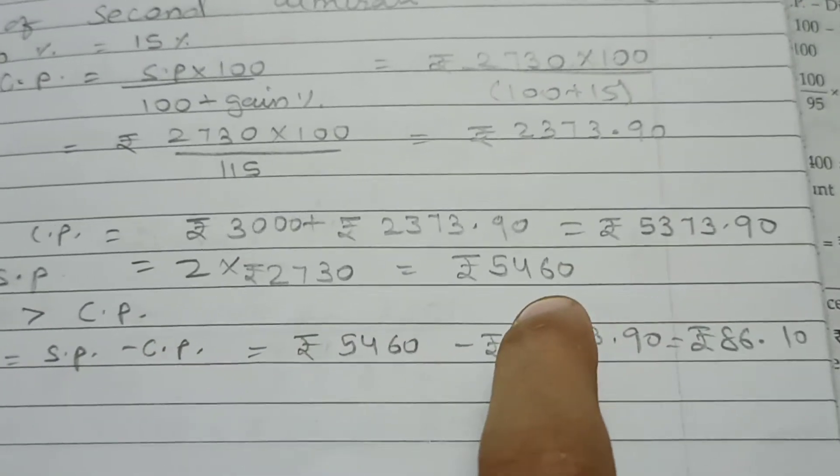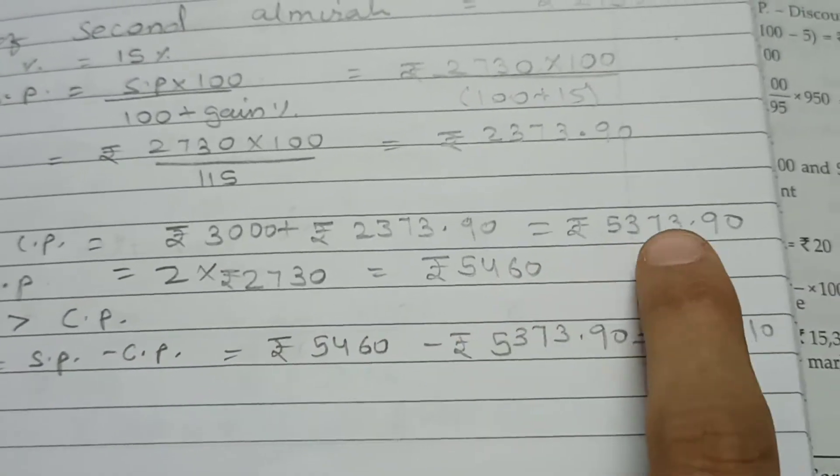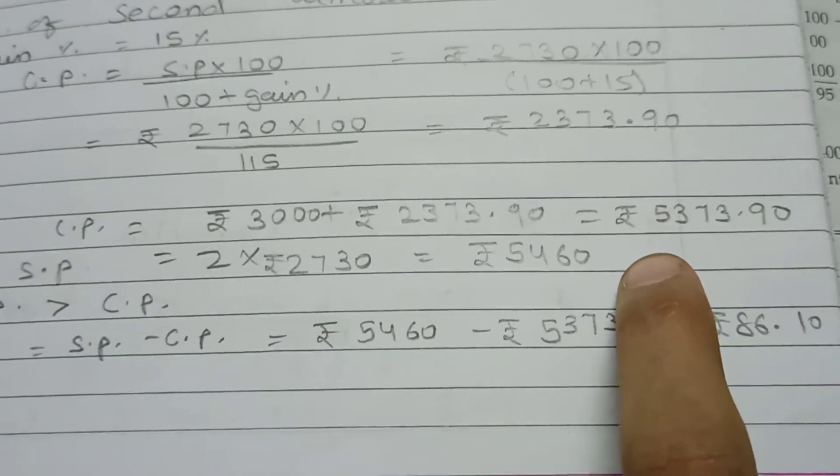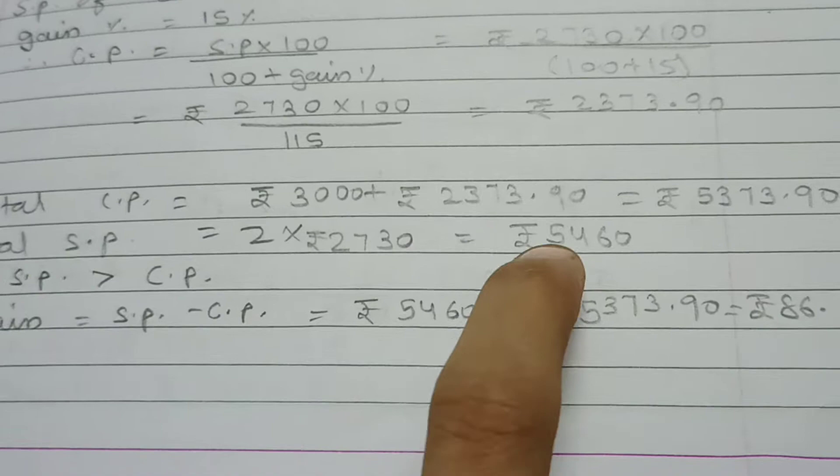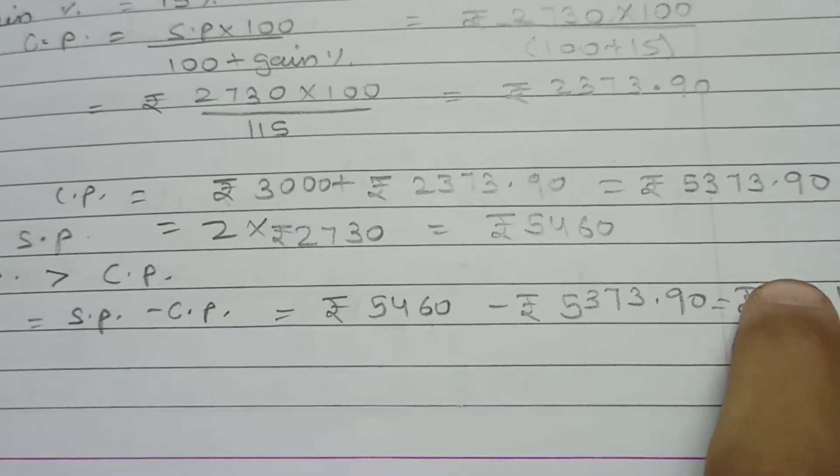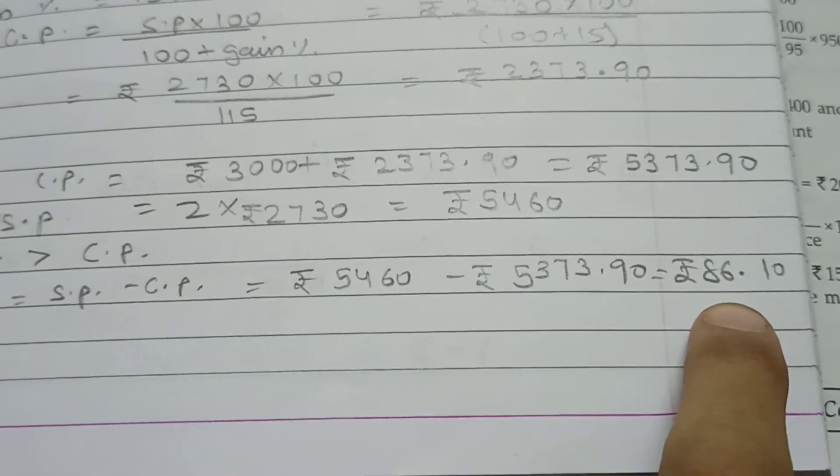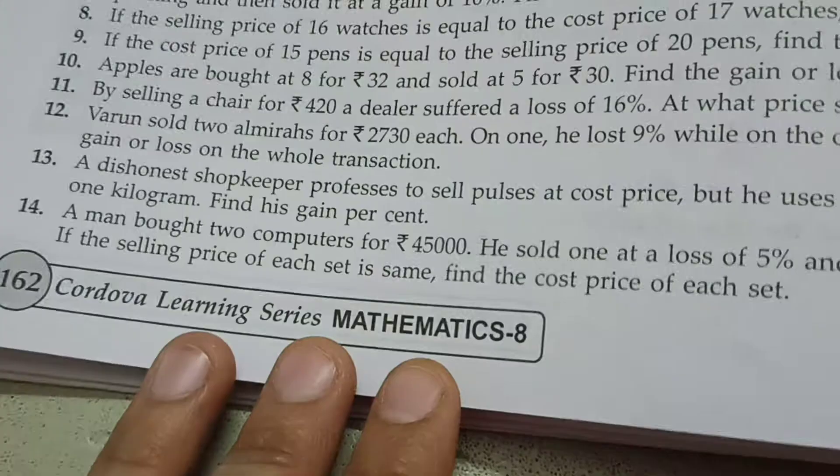Now, here, we can clearly see this is greater than this. So, it is again gain, he made profit by selling both. How much profit? 5460 minus 5373.90, that is rupees 86.10.